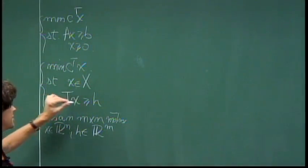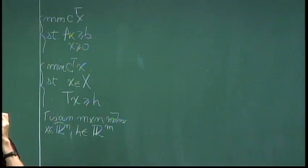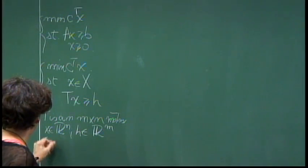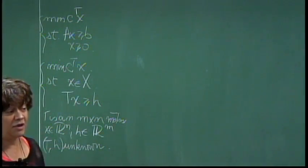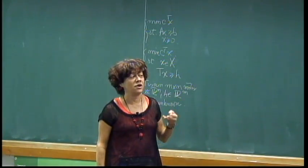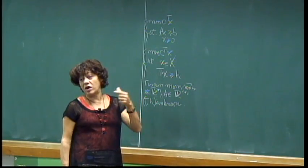We will write the problem now as: minimize C transpose X subject to X belonging to a deterministic set capital X — this corresponds to the capacity constraints — and then a matrix T times X greater than a vector H, where T is an M-by-N matrix, X is in R^N, and H is in R^M. For our example we have two uncertain constraints corresponding to the demand, and also two products, OIL 1 and OIL 2. T and H are unknown, and T is called the technology matrix.